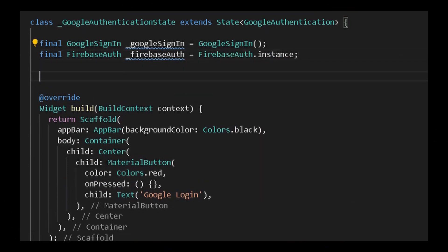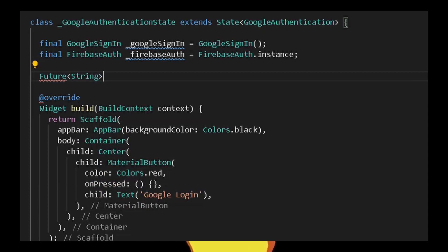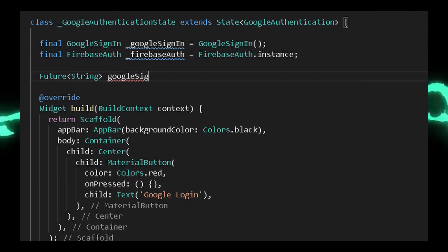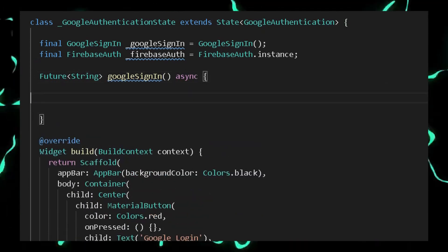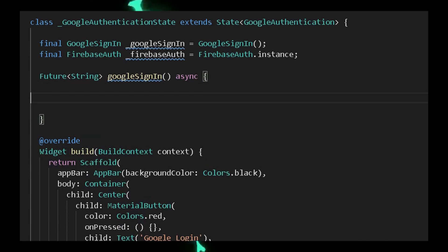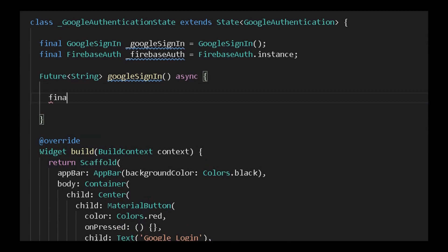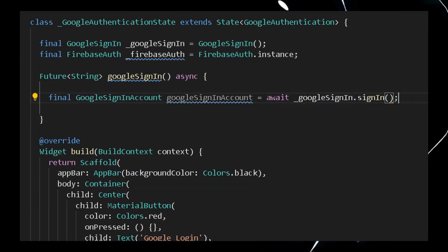Now declare an async Future method for initializing Google Sign-In. A Future is useful when data is asynchronous — we'll be loading data from an external API. Write a Future method in the form of String, since we'll be returning login credentials. Name it googleSignIn and mark it as async. The first thing inside is to fetch the account from the user: final GoogleSignInAccount googleSignInAccount = await _googleSignIn.signIn(). This is the entry point for the user to sign in.